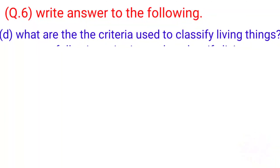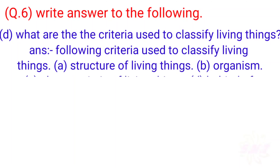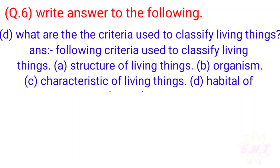D: What are the criteria used to classify living things? Answer: The following criteria are used to classify living things — A: Structure of living things, B: Organisms, C: Characteristics of living things, D: Habit of living things.